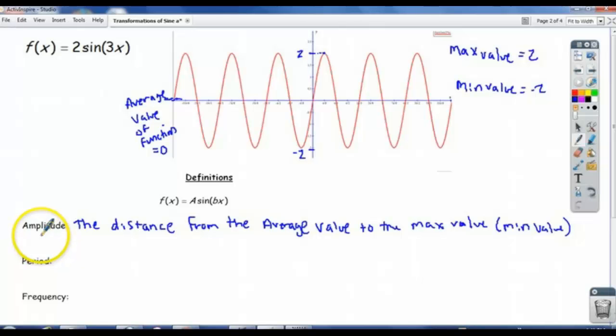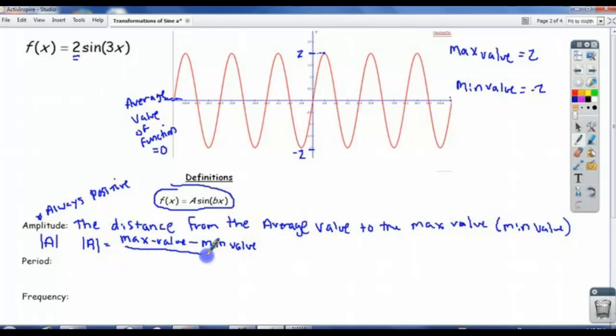So the amplitude is often denoted absolute value of A. The A value here, if we look at our general case, is 2, and the absolute value of 2 is 2. Now the reason the absolute value is important is because sometimes A can be negative, but the amplitude is always positive. It's never negative because it's a distance.